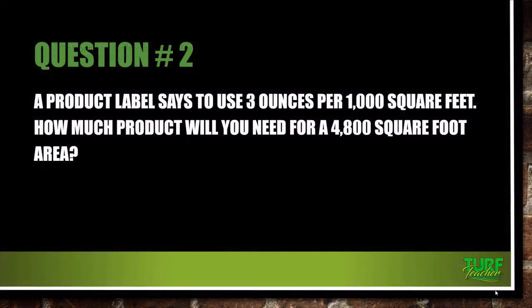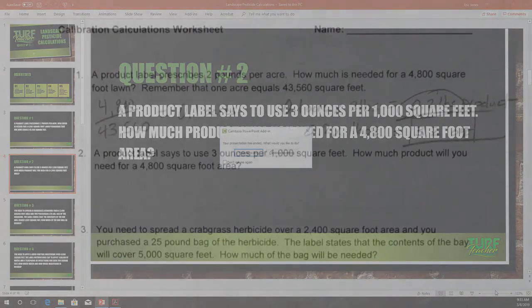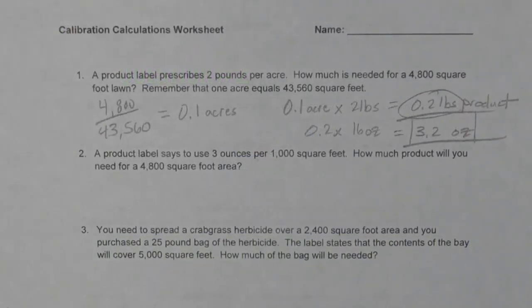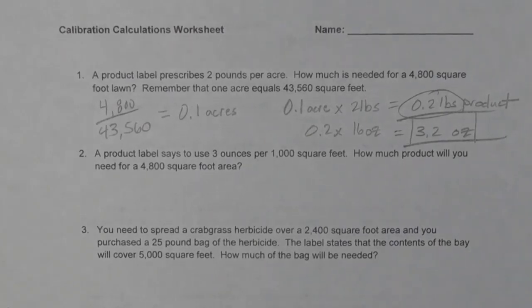Question number two: a product label says to use 3 ounces per 1,000 square feet. How much product will you need for a 4,800 square foot area? I love the fact that we can break this into 1,000 square foot blocks — we're going to put 3 ounces per 1,000 square feet.